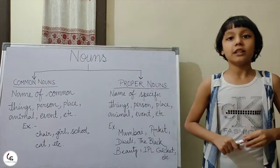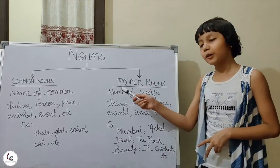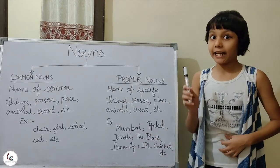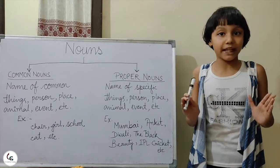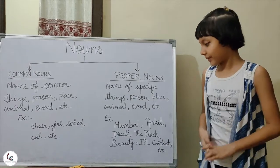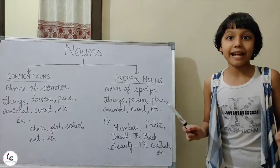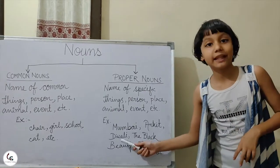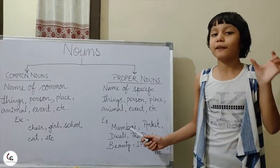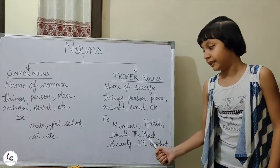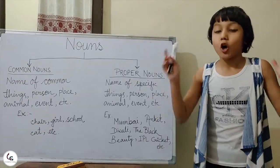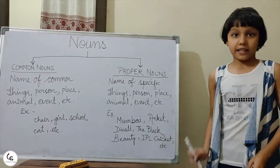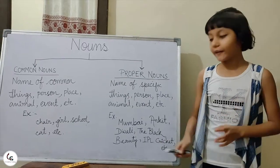Now let's see some examples of Proper Nouns. Mumbai — it's a name of a specific place, so it is a proper noun. Ankit — it's the name of a specific person, so it's a proper noun. Diwali — it's the name of a specific festival. The Black Beauty — it's the name of a specific novel. IPL Cricket — it's the name of a specific event.